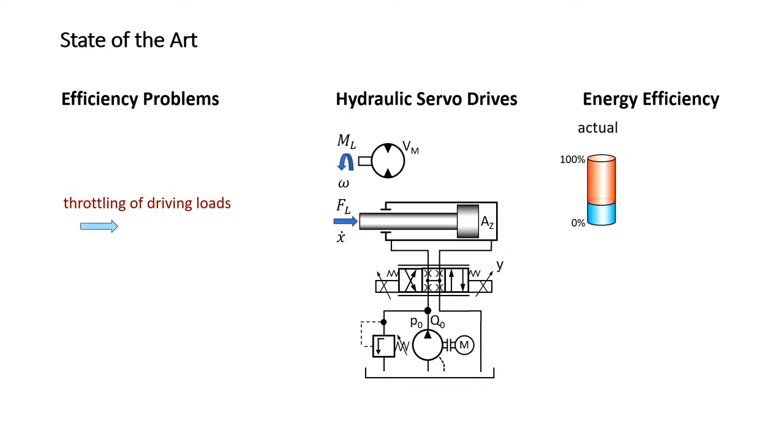First of all, such a valve-driven cylinder can't handle driving loads coming from outside. The only thing that we can do is we throttle them away, and so we have more and more heat in the system and no benefit from it. The second point is the throttle losses inside the valve itself. Each driving edge producing such throttle losses, and the proportional or servo valve like this here has, in the end, four of those driving edges. And last but not least, we very often find a constant hydraulic power production. This is a very cheap investment on one hand, but you pay it day by day with energy losses.